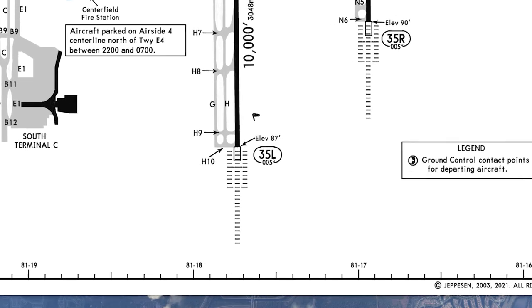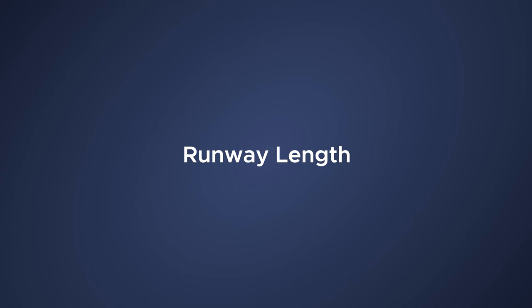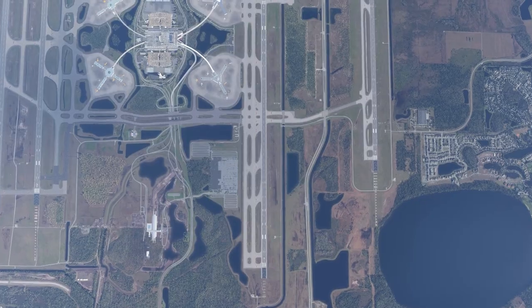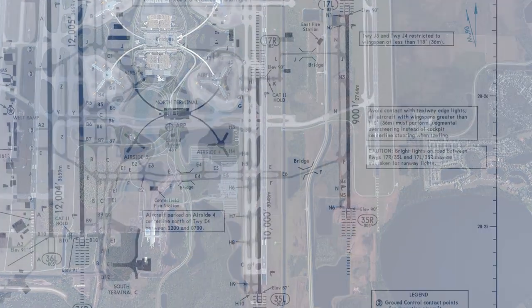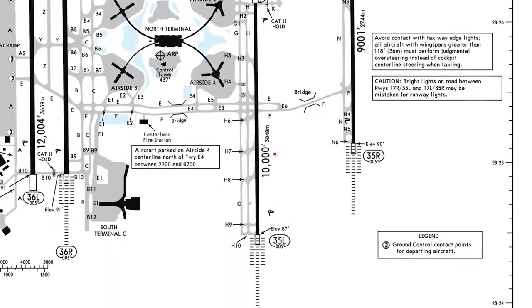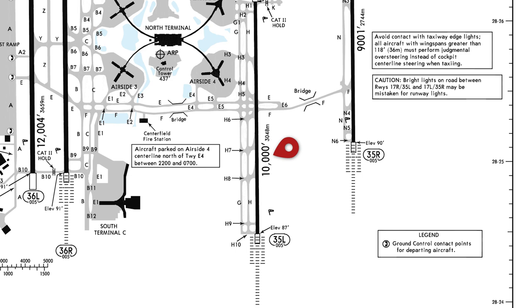These are actually runway designated numbers, and they're in magnetic unless there's a T next to it, which indicates true. Let's take a look at something very important: the physical length of the runway. We have runway length in thousands of feet with meters next to it on international airports.